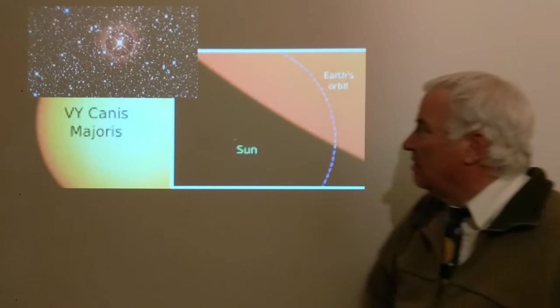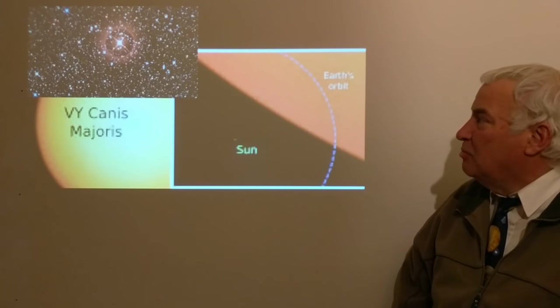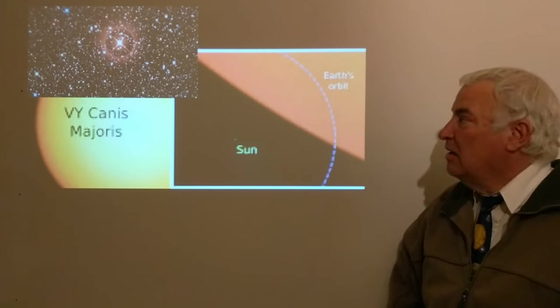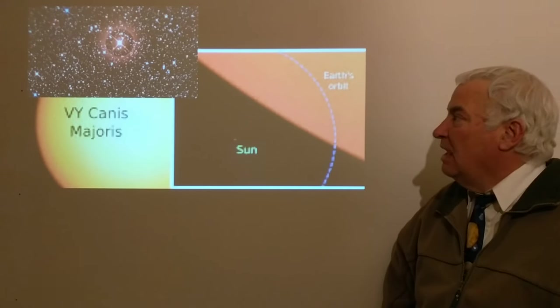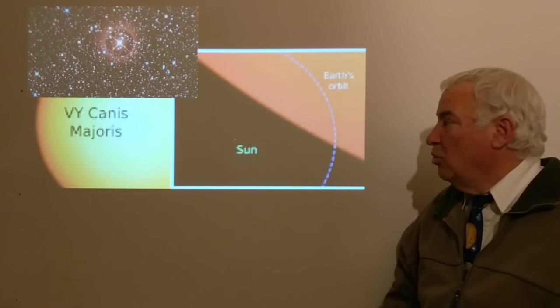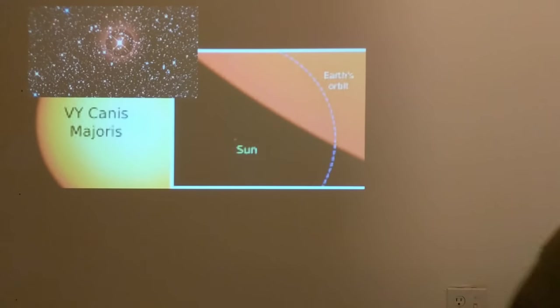We can see that it's red and bright. It's bright because it's big and red because the surface is cool. So this is a red supergiant right near the end of its life.